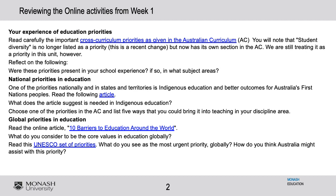I hope by now that you've actually done the online activities for week one. They're quite comprehensive and they cover a range of key issues. I'd go from your personal take on these education priorities right through to the global priorities in education. I've asked you to reflect on what you've experienced as the priorities in your own school placement or your school experience when you were at school. What subject areas in particular focus on some of these priorities, such as Aboriginal and Torres Strait Islander histories and cultures, sustainability, or diversity? What was the focus in your school? Reflect critically about that.